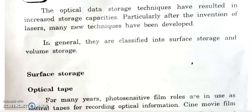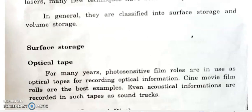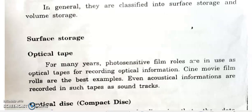The first type is optical tape. Here, photosensitive film rolls are used. Information is recorded over the photosensitive film roll and read out from the film.